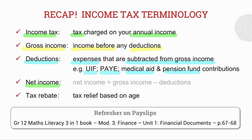Then, our net income. This is our income that is calculated by taking our gross income and deducting any deductions. Then we have our tax rebate, and this is tax relief that SARS gives us based on age. Should you want a refresher on payslips which go through this income tax terminology, please turn to your Grade 12 Mass Literacy 3-in-1 book, Module 3 Finance, Unit 1 Financial Documents, on page 67 to 68.